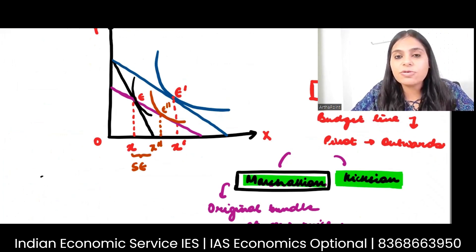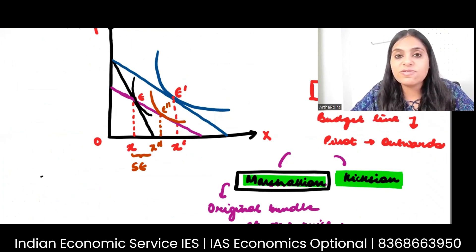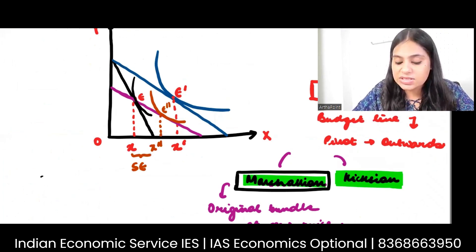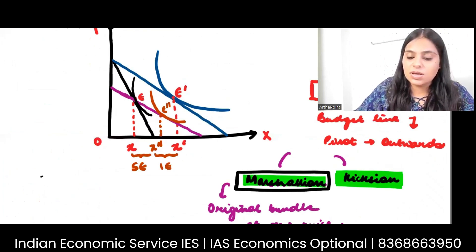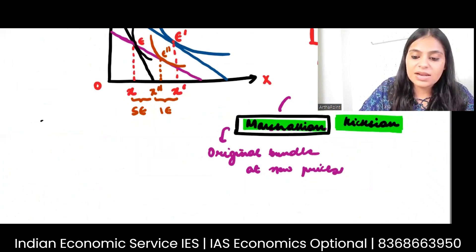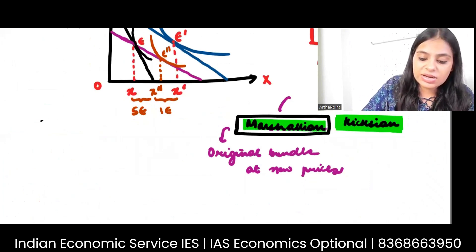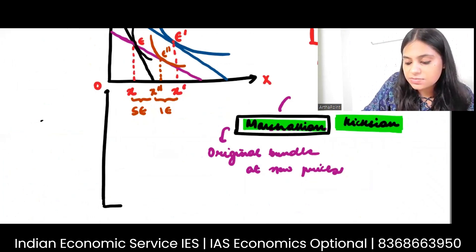As I go from E double dash to E dash, consumption of both goods increases because both are normal goods — this is the income effect. Now let's go ahead and draw the demand curves.